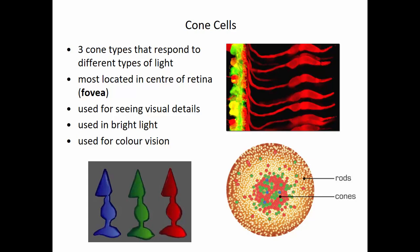The other type of cells are called cone cells. We have three different cone types that respond to different wavelengths of light. Most cone cells are located in the center of the retina in the fovea region. When we want to see something in detail, we look directly at it, focusing the light right on our cone cells at the fovea, giving us our highest visual acuity. Cone cells need lots of light to be stimulated. We have blue cones, green cones, and red cones, and stimulating different wavelengths stimulates different numbers of each cone type, allowing us to perceive color.